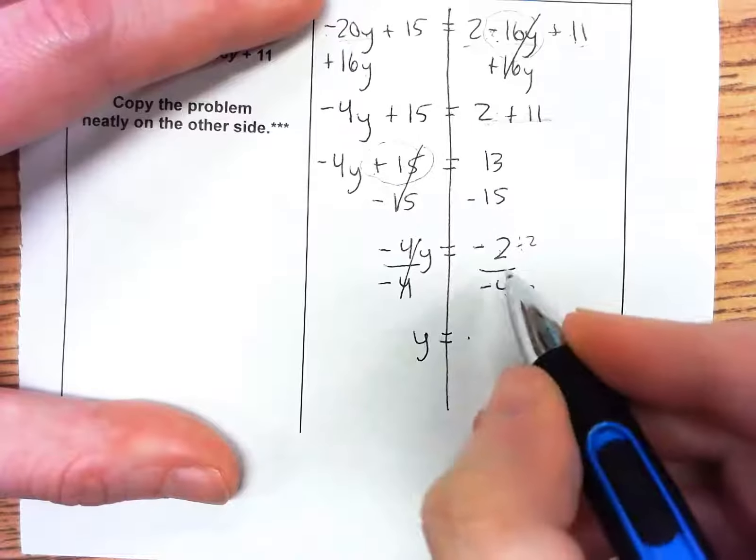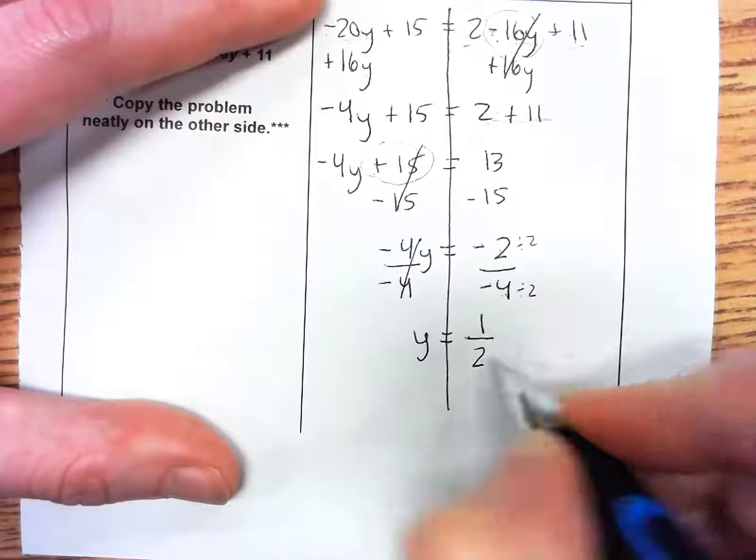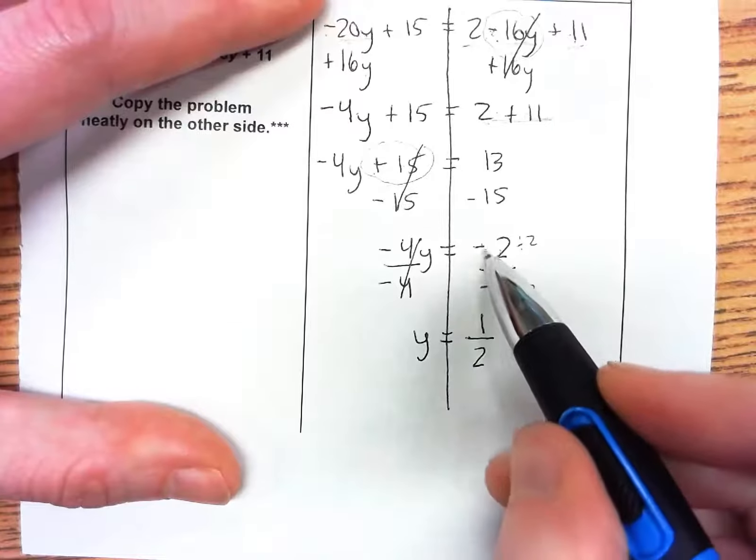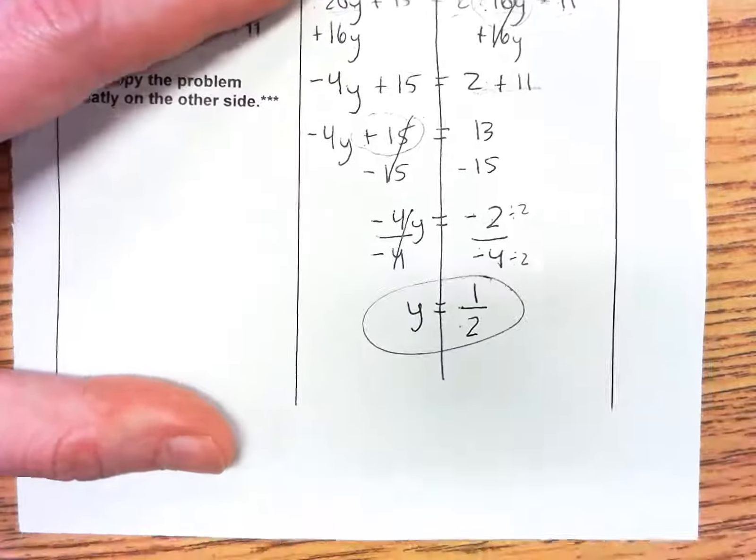They both can be divided by 2. So 2 divided by 2 is 1, and 4 divided by 2 is 2. Again, I'm not putting the negative sign because a negative divided by a negative is positive. Our answer is y equals one-half.